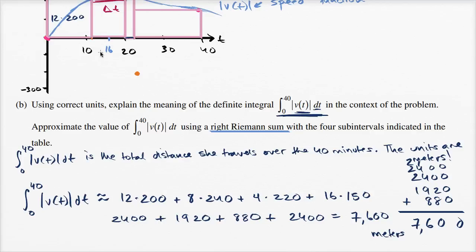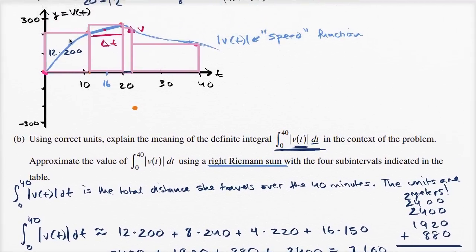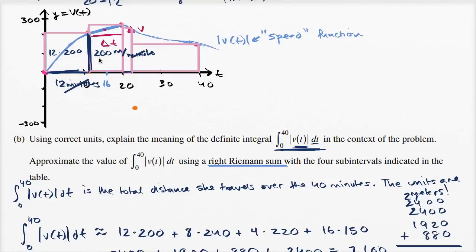You might ask: didn't we just find an area? Wouldn't that be in meters squared? But remember, we're finding the area under the velocity graph. For this rectangle, you're multiplying 12 minutes times 200 meters per minute — the minutes cancel, and you're left with 2400 meters. So even though it's an area geometrically, the units work out to meters, not meters squared.